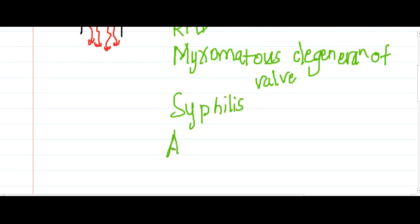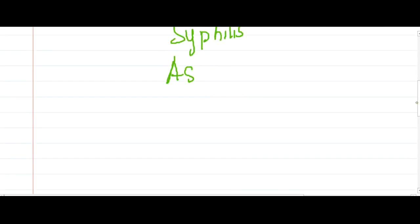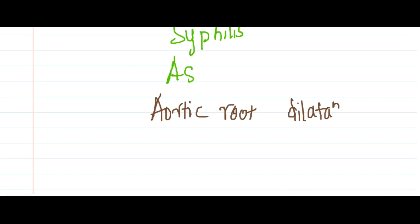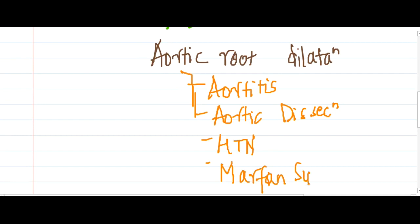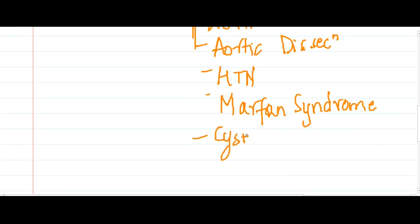Certain conditions cause aortic root dilatation, which leads to increased opening of the aortic valve, resulting in aortic regurgitation. Aortic root dilatation is seen in aortitis, aortic dissection, hypertension, Marfan syndrome due to fibrillin-1 defect, and cystic medial necrosis — all resulting in aortic regurgitation.